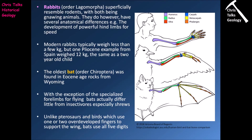The oldest example of a bat — order Chiroptera — was found in Eocene age rocks from Wyoming. With the exception of specialized forelimbs for flying, bats actually differ little from insectivores, especially shrews. Unlike pterosaurs and birds which typically use one or two overdeveloped fingers to support the wing, bats use all five digits to support the wing membrane. You can see how the bat forelimb is designed to use all five fingers to keep the wing membrane taut for flight, compared to a bird where the wing is primarily supported by just two digits. This also clearly shows the similarity between the forelimb designs of humans, birds and bats — demonstrating a common ancestor.